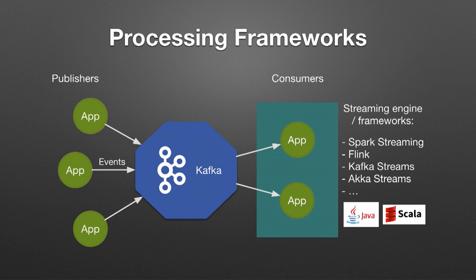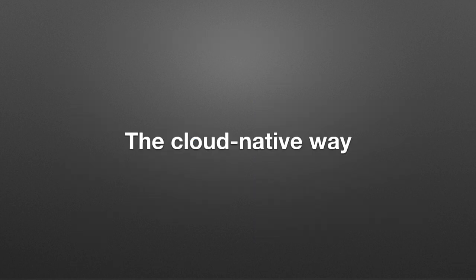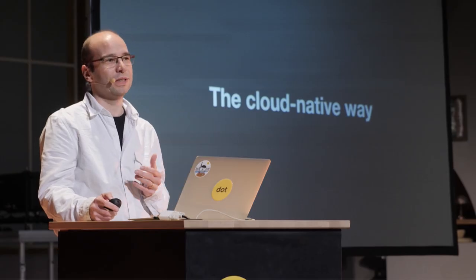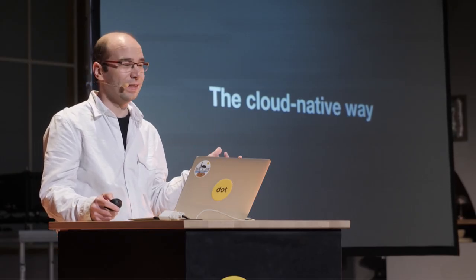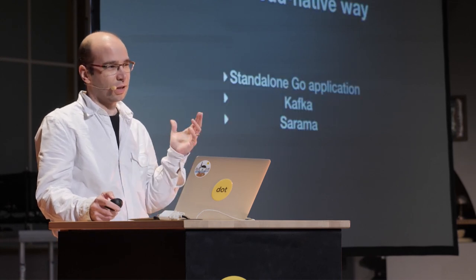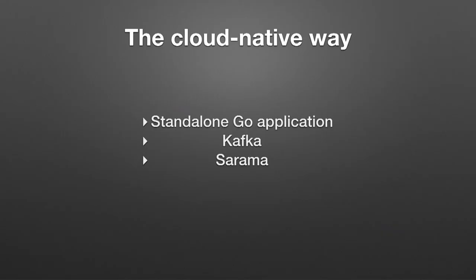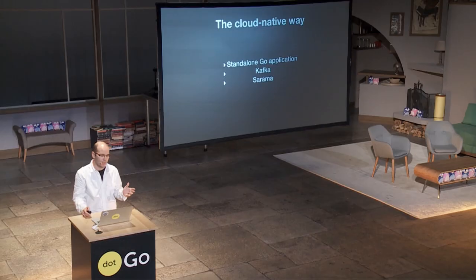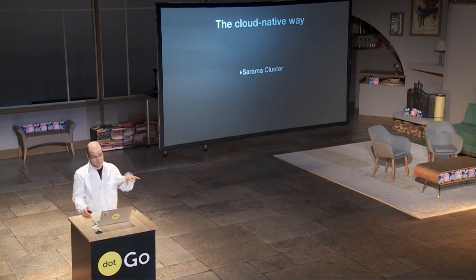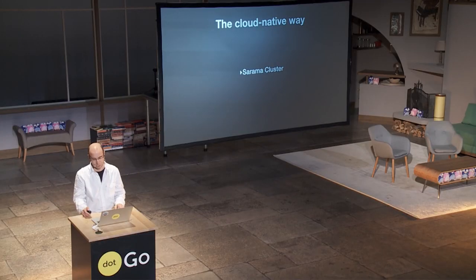However, most of the time the processing you're trying to achieve is quite obvious and your code should be much simpler. There is a better approach: with Go you can build components and services that are lightweight and cloud-native friendly. The cloud-native way splits your system into standalone Go console applications connected to Kafka using the excellent Sarama client library. On top of Sarama, the cluster library can be used to make your Go Kafka client scale horizontally, thanks to Kafka consumer group support.